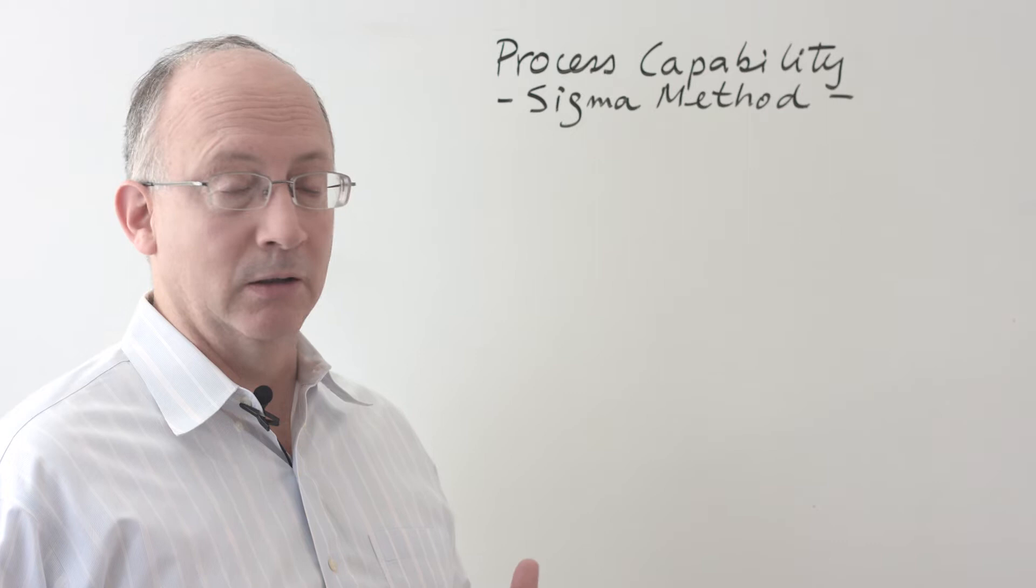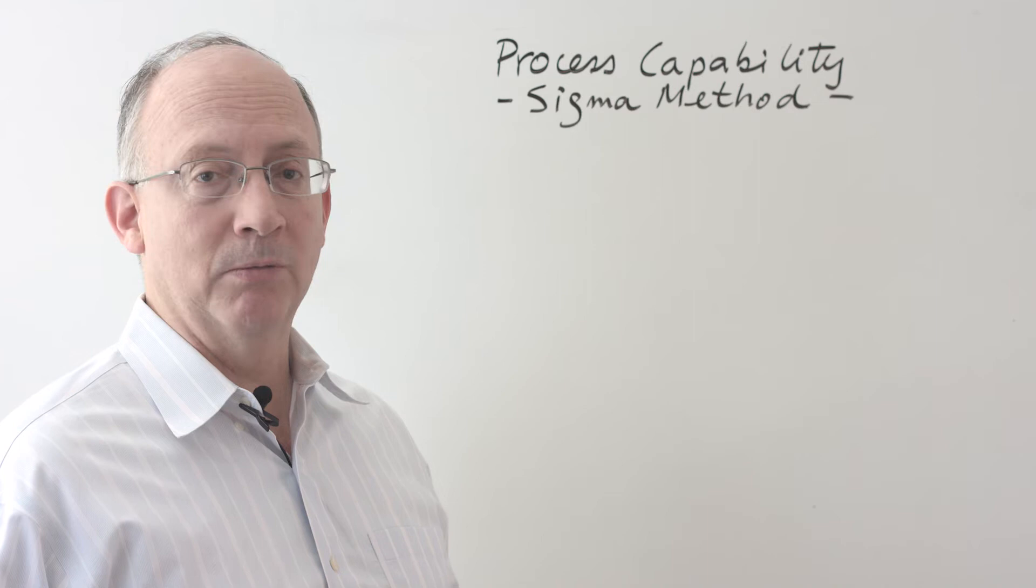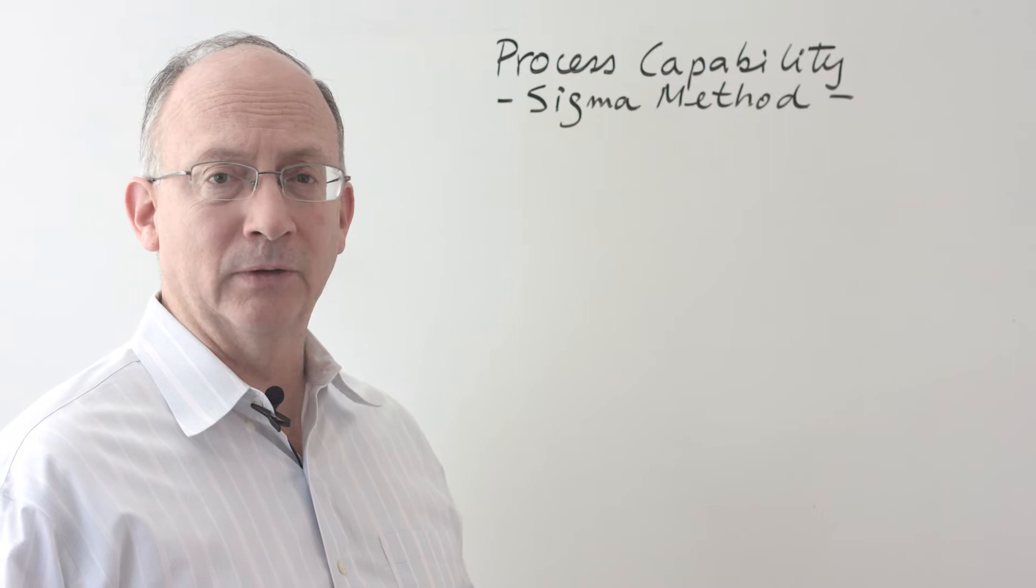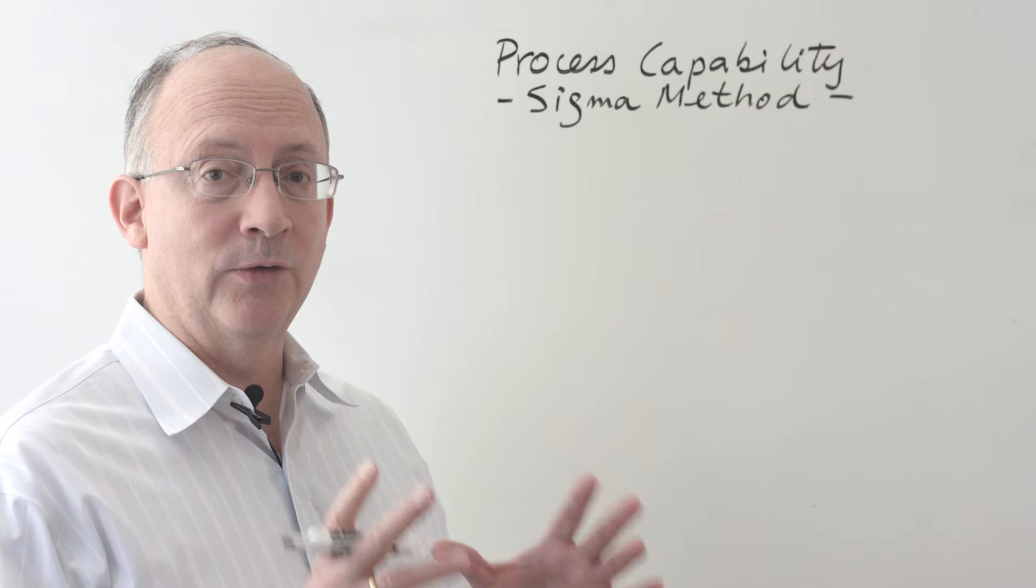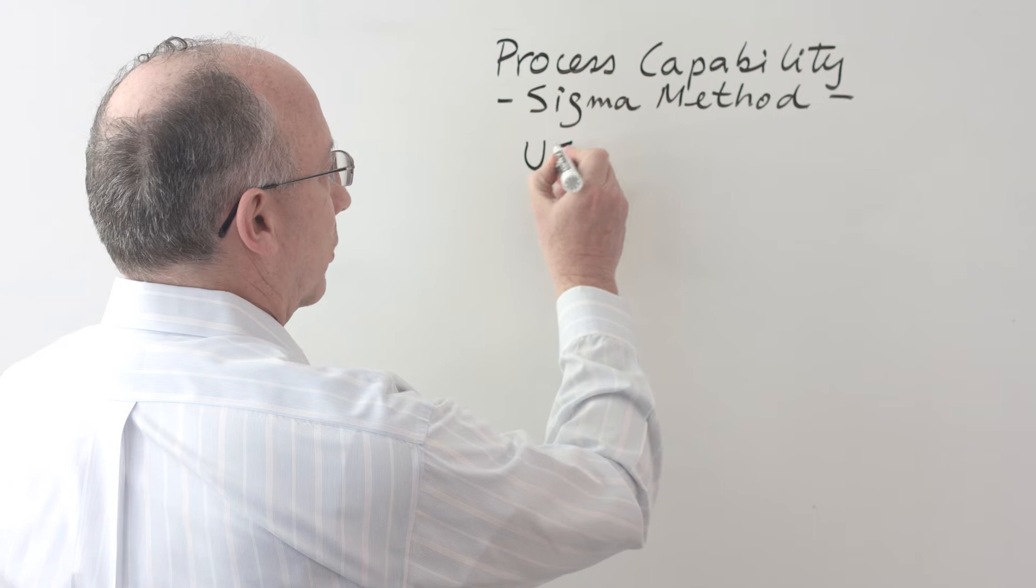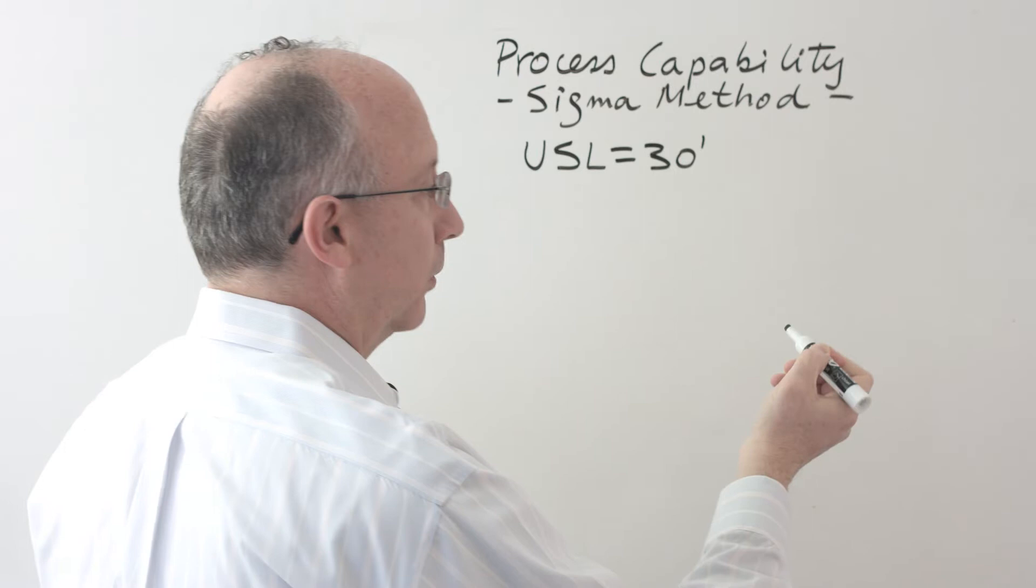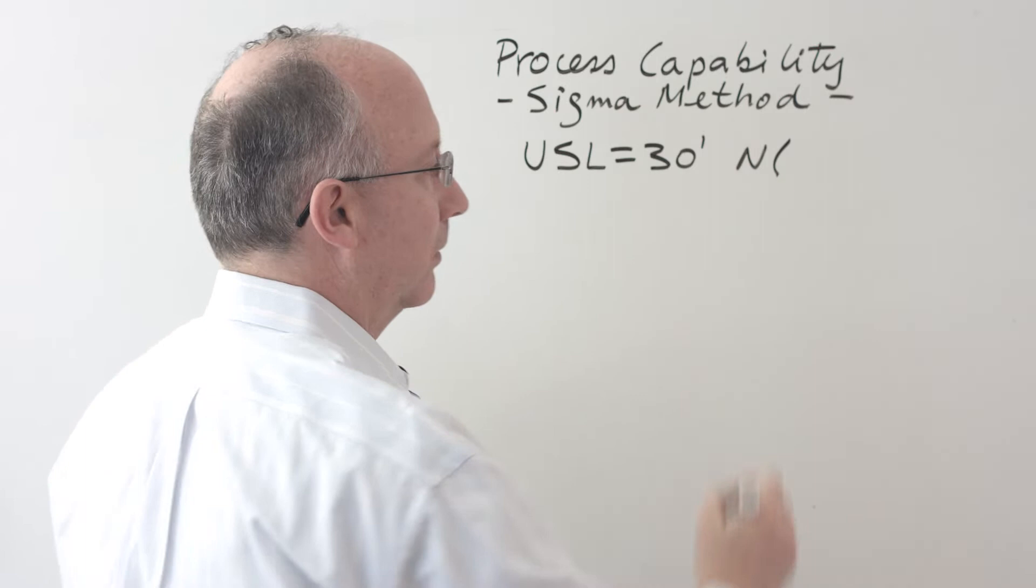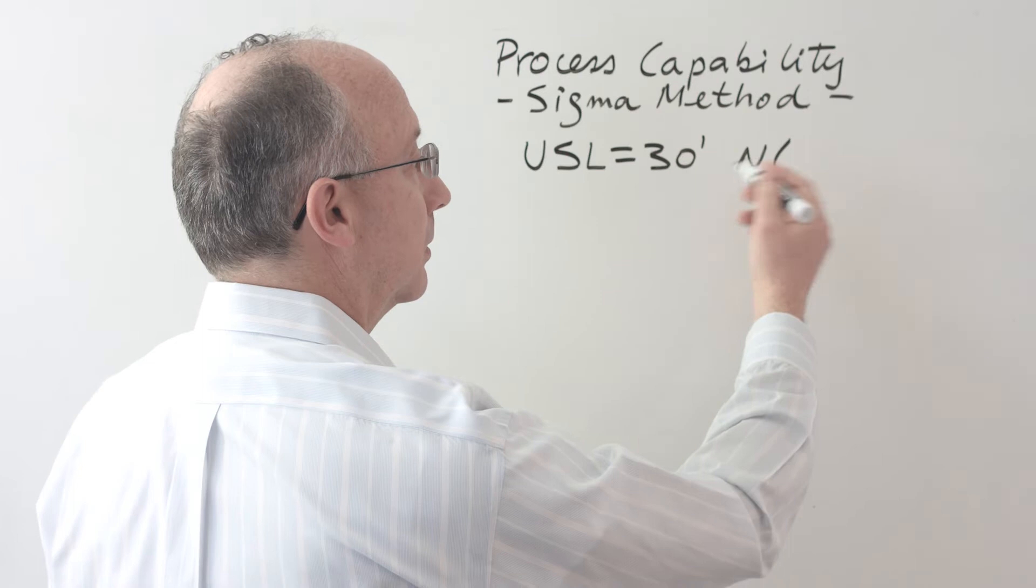Now, by company policy or by the target that we have set for ourselves so that we may be competitive, we would like to be able to deliver all of the pizza orders in 30 minutes or less. So this already gives us the three numbers that we need in order to calculate the capability of a process. We're going to have an upper specification limit, which is 30 minutes. We also have a process normally distributed with an average of 30 minutes and a standard deviation of 3 minutes.